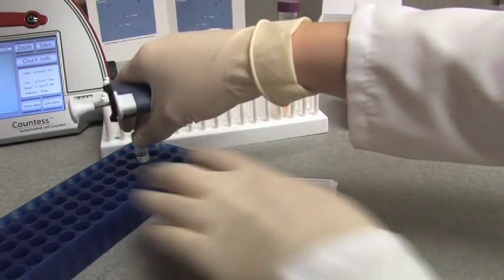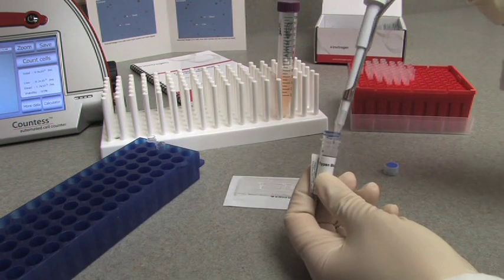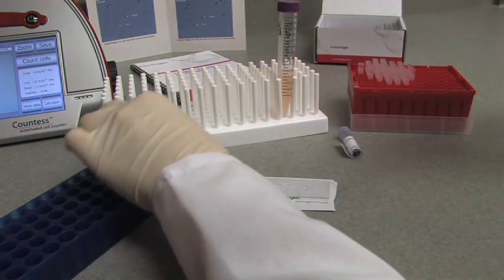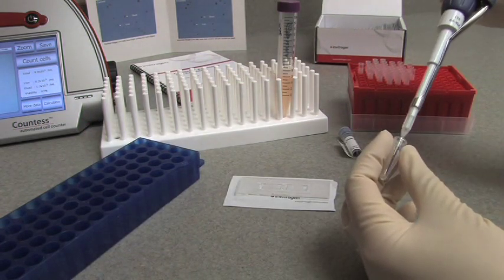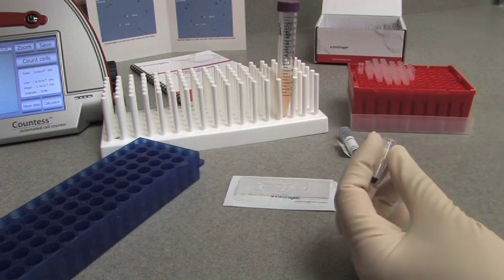Mix your cell suspension one-to-one with the 0.4% Trypan Blue solution provided with the Countess instrument. For instance, mix 10 microliters of your cell suspension with 10 microliters of Trypan Blue. Ensure the mixture is mixed thoroughly by gently pipetting up and down.